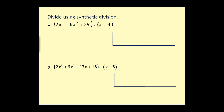Let's try another. First, we need our coefficients in descending order: two, six, and there's no x term so we have to include a zero coefficient for x, and then 29. So we'd have two, six, zero, and 29. If we leave off the zero, the process will not work correctly. The value of k — since it says x plus four — will be negative four.